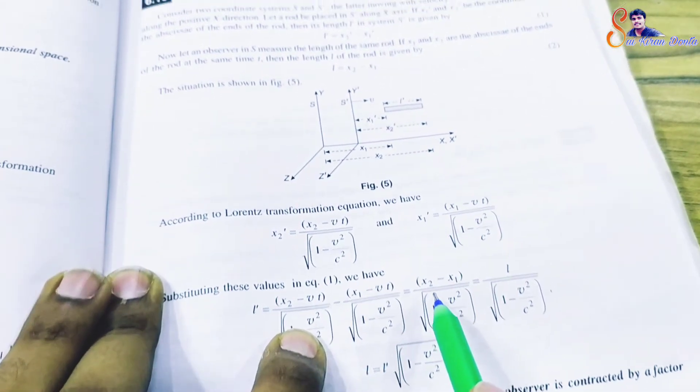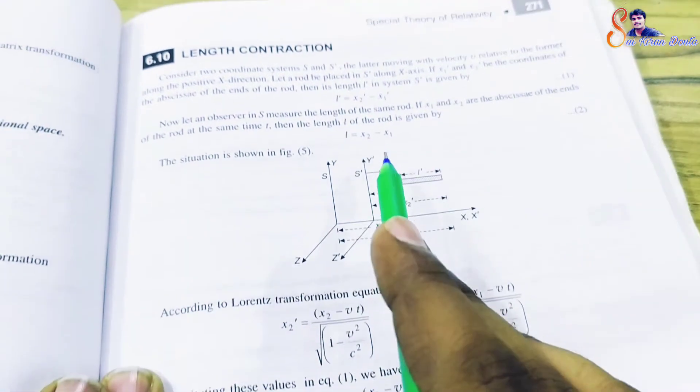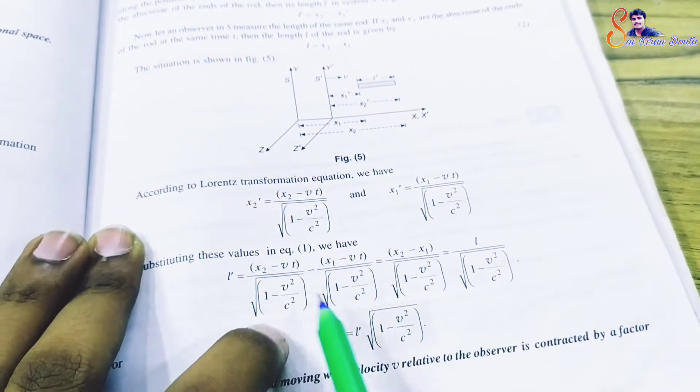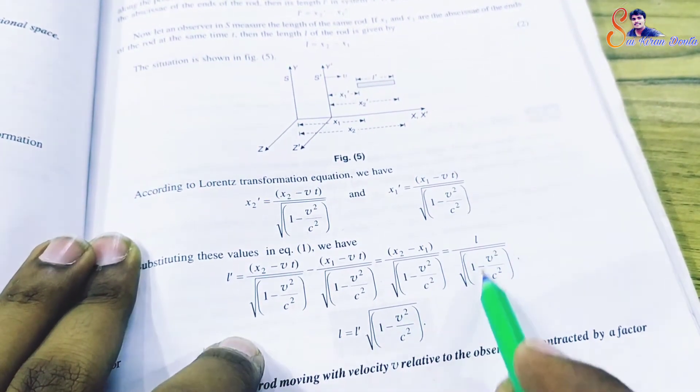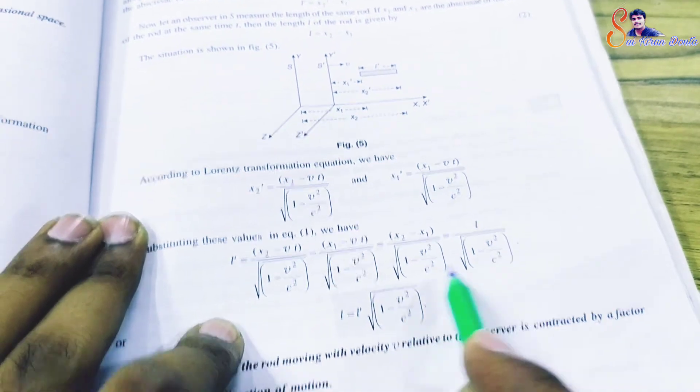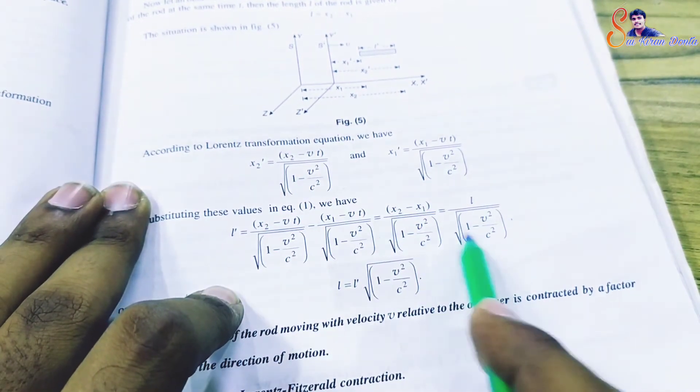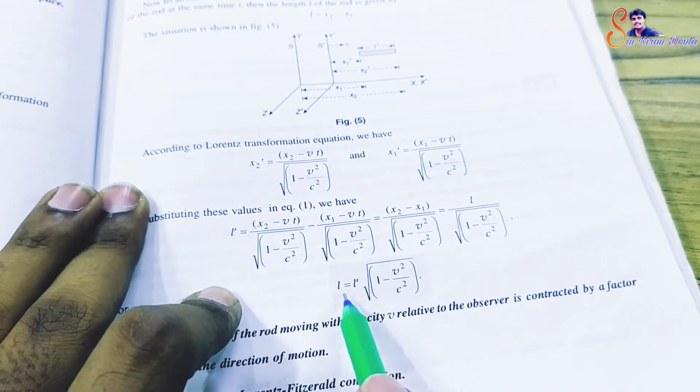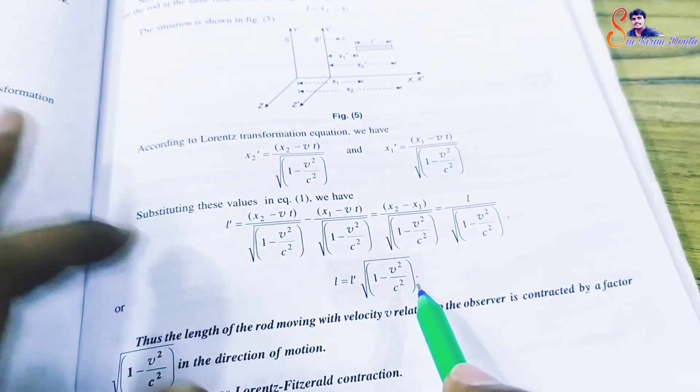Since x2 minus x1 equals l, we have l dash equals l divided by square root of 1 minus v squared by c squared. Therefore, l equals l dash times square root of 1 minus v squared by c squared.